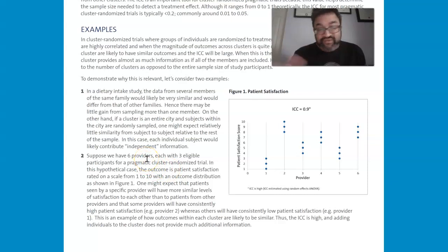Then, in the second one, suppose we have six providers, each with three eligible participants for pragmatic cluster randomized trial. In the hypothetical case, the outcome is patient satisfaction rated on a scale from one to ten with an outcome distribution as shown in figure one.